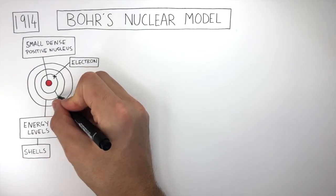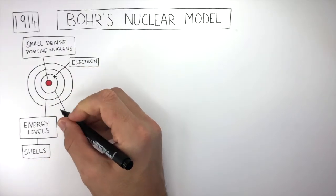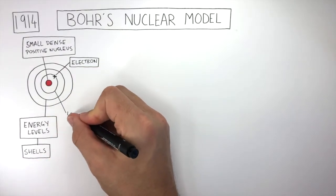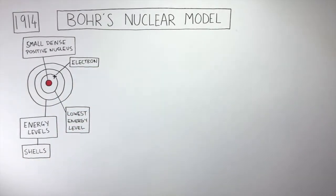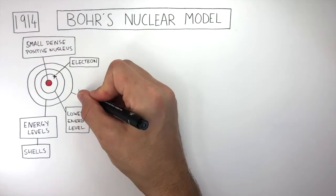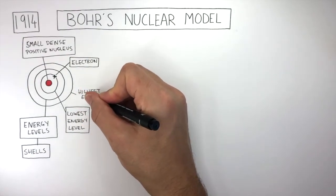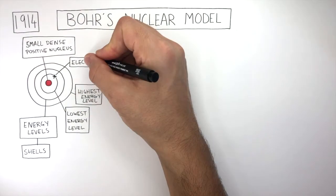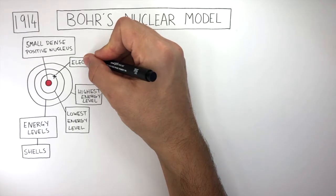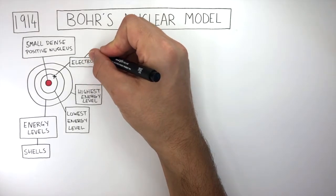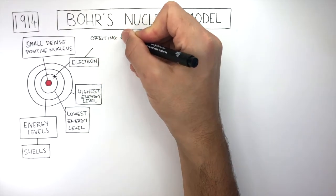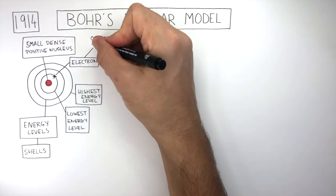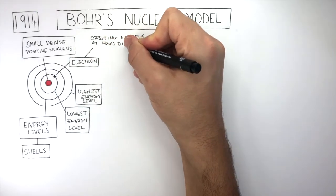The shell closest to the nucleus is the lowest energy level, and the shell furthest away from the nucleus is the highest energy level. Bohr was the first person to say electrons are orbiting the nucleus at fixed distances.